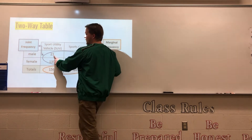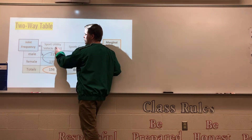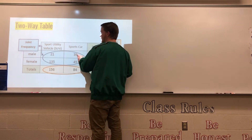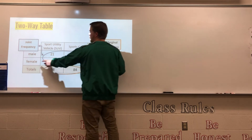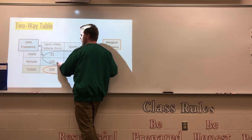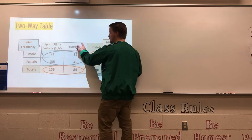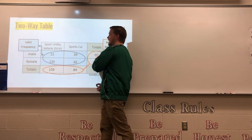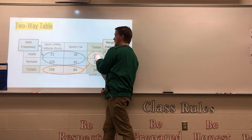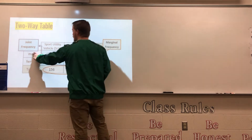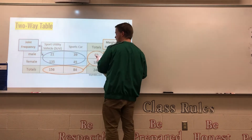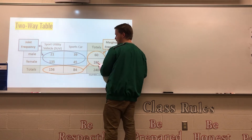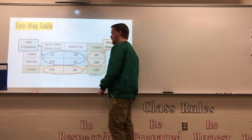For example, 21 represents the males who drive SUVs. 39 is the males who drive a sports car. Females that drive an SUV is 135, and females that drive a sports car is 45. The total of 60 is adding 21 and 39 — that's the total number of males. Then 135 plus 45 equals 180, which is your total number of females.